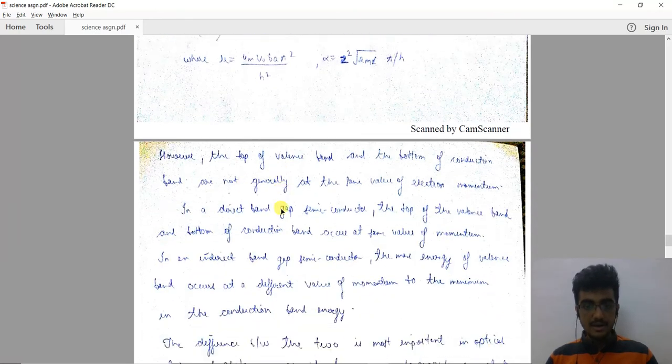However, the top of the valence band and the bottom of the conduction band are not generally at the same value of electron momentum. In a direct band gap semiconductor, the top of the valence band and bottom of the conduction band occur at the same value of momentum.